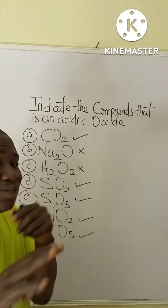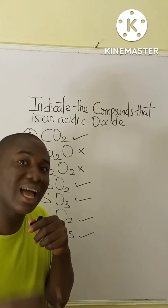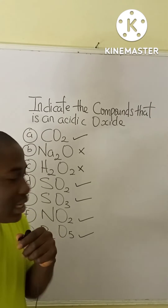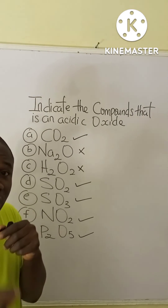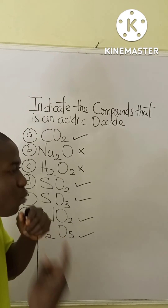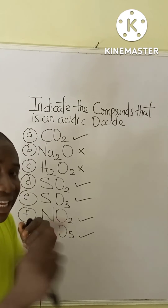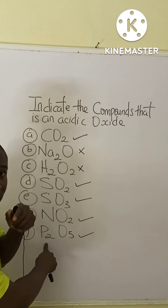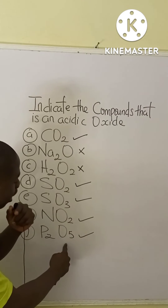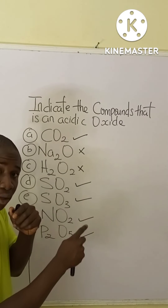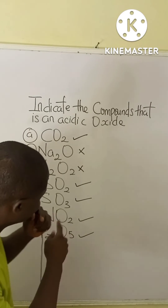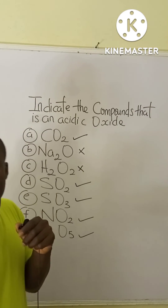NO₂ is also an acidic oxide because nitrogen is a non-metal, but it must be noted that NO₂ is not just an acidic oxide — it is a mixed acidic oxide. P₂O₅ is also an acidic oxide, called diphosphorus pentoxide, because it contains two atoms of phosphorus combining with five atoms of oxygen.